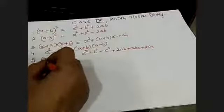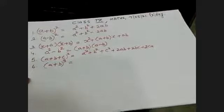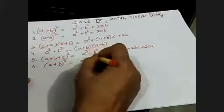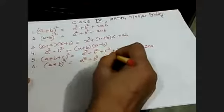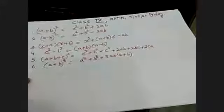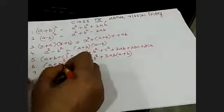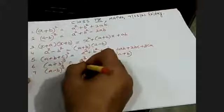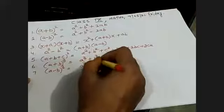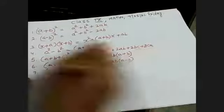And the next is the cube of binomial terms. A plus B whole cube is equal to A cube plus B cube plus 3AB in the bracket A plus B. And when the subtraction is given of the whole cube, then it is equal to A cube minus B cube minus 3AB in the bracket A minus B.